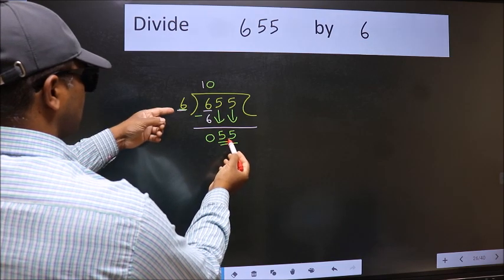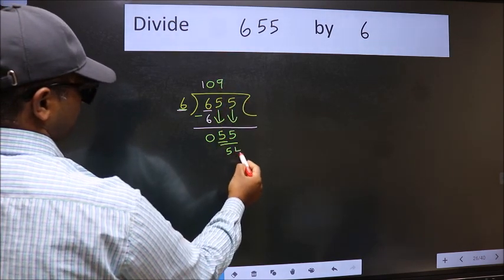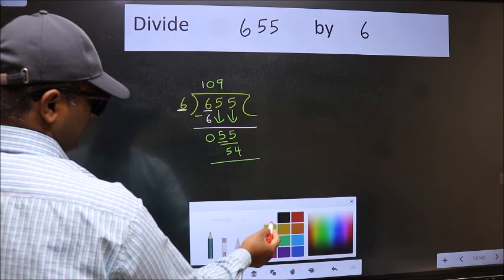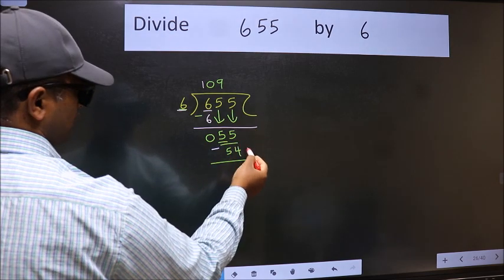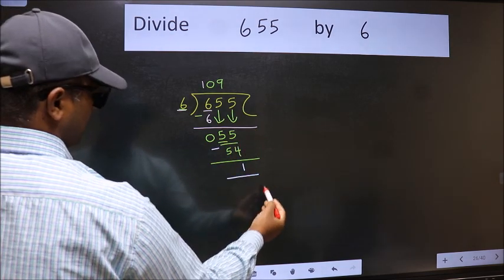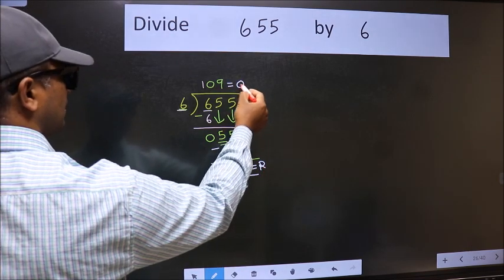A number close to 55 in 6 table is 6 nines, 54. Now we should subtract. We get 1. No more numbers to bring down. So we stop here. This is our remainder and this is our quotient.